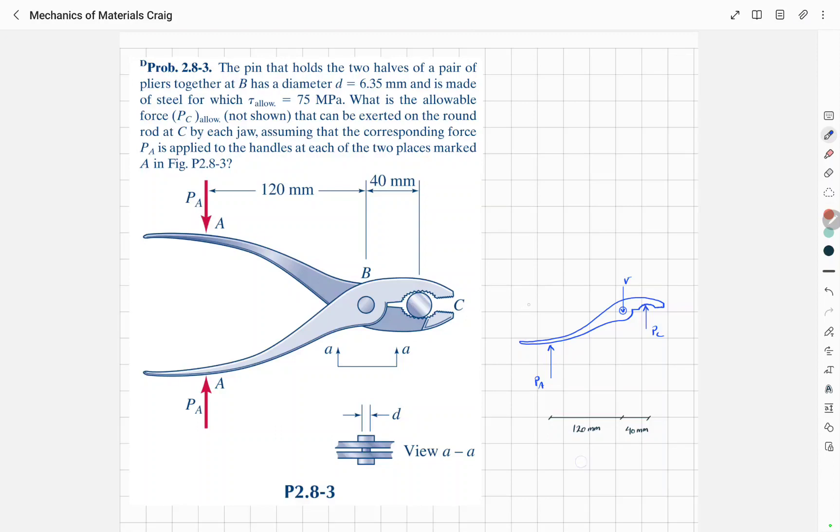We start solving this question by drawing this simplified diagram and we know that the allowable shear stress for the pin is 75 megapascals. So we can write tau allowable divided by As which is 75 megapascals.